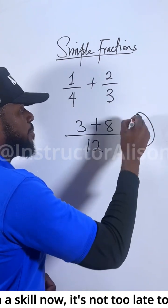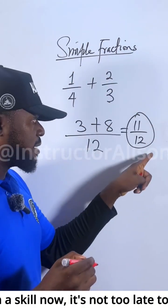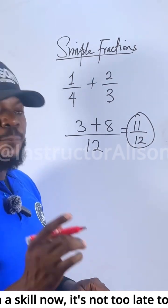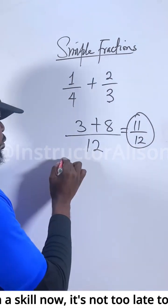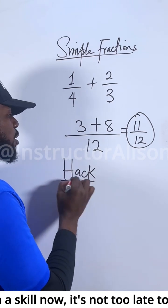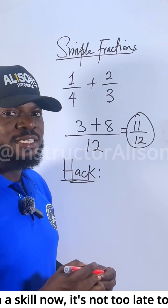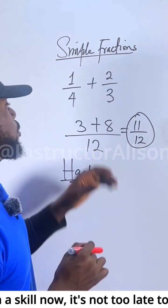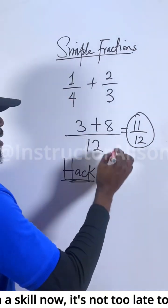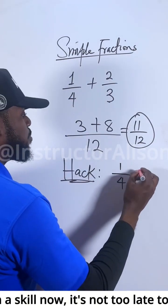This answer as a proper fraction still gives us a proper fraction. Now wait — let me tell you the hack I want to teach you. When they give you a quiz and just ask you to tick the answer, you know you don't have time. They just write the equation there as 1 over 4 plus 2 over 3.